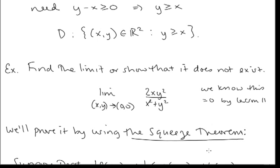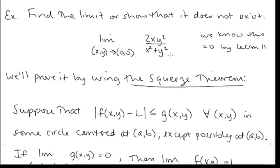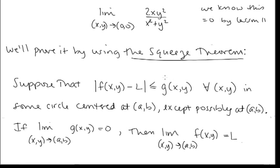Now let's look at an example from the last lesson where we showed a limit exists and equals zero using the epsilon-delta definition. Here, we'll show the limit equals zero using the squeeze theorem. The squeeze theorem says: suppose |f(x, y) − L| ≤ g(x, y), and the limit as (x, y) → (a, b) of g(x, y) equals zero. Then the limit of f(x, y) equals L.